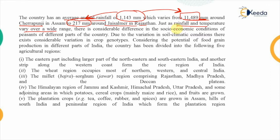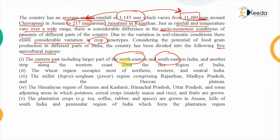Along with climatic conditions, there is huge variation in the socio-economic conditions of farmers, leading to considerable variation in crop types. Depending upon food production potential in different parts of India, the country has been divided into five agricultural regions. The first is the eastern region — comprising the northeastern and southeastern parts of India along with the western coast — which forms the rice region, a very humid area suitable for rice cultivation.